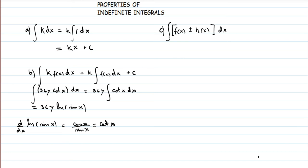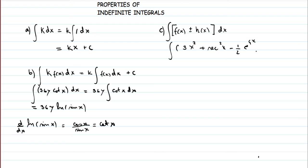Now consider integrating a sum or difference of functions. For example: the integral of 3x² + sec²(x) − (1/2)e^(4x) dx. The rule says that when you have many functions combined, you can separate them and find the integral of each one individually.